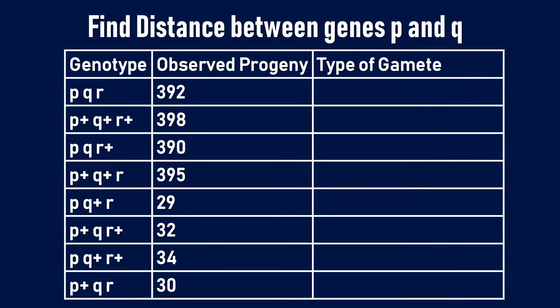In this question, we are supposed to find the distance between genes P and Q. Here, instead of capital and small letters, they have used the plus sign and no plus sign to differentiate the two gene forms. When we look at these values, we understand that they are not really helping us decide which is the parental type and which is the double crossover type — we cannot have four parental and four double crossover types. So we need to use an alternative approach to solve this problem.